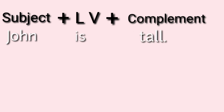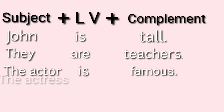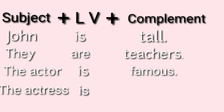John is tall. They are teachers. The actor is famous. The actress is she. The subjects are John, they, the actor, and the actress. Your linking verbs are is, are, is, is. Your complements are tall, teachers, famous, and she.